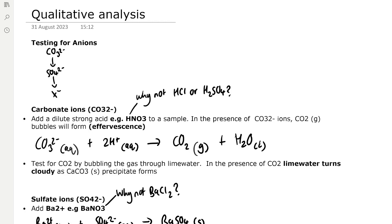To test for carbonate ions we add a dilute strong acid such as nitric acid to a sample. Consider why we don't want to add hydrochloric acid or sulfuric acid. In the presence of carbonate ions CO32-, carbon dioxide gas bubbles will form or this is also known as effervescence.